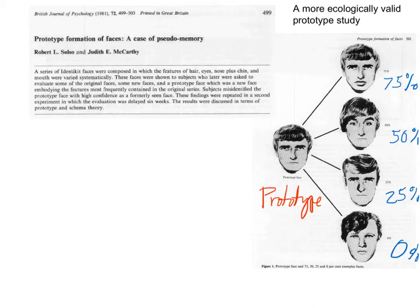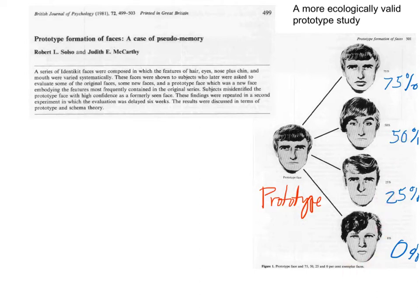Here is a more ecologically valid study in which facial prototypes were used. Each of the faces was made up of features, such as hairstyle, mouth shape, and other attributes. A similar logic as was used in the dots study was used here. By including three of the four facial features, a 75% similar distortion face could be created. Similarly, 50% and other distortion levels could be created by including fewer of the prototype features.